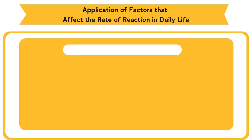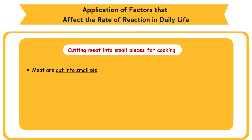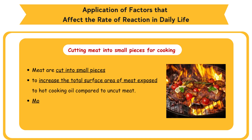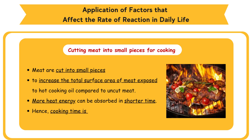Example: Cutting Meat into Small Pieces for Cooking. Meat is cut into small pieces to increase the total surface area of meat exposed to hot cooking oil compared to uncut meat. More heat energy can be absorbed in a shorter time. Hence, cooking time is shortened.